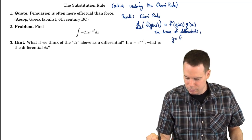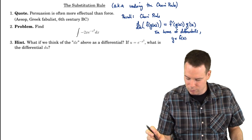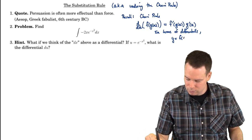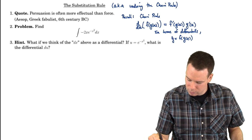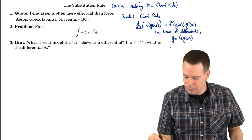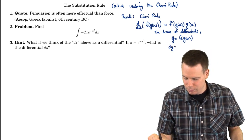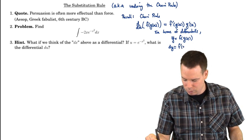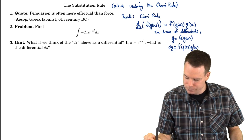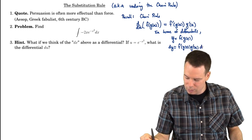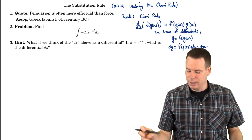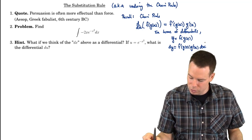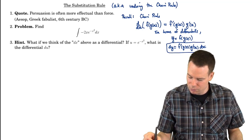In terms of differentials, which is going to be more convenient for us, if y is the composition f of g of x, then dy — the differential — is the derivative of the function by the chain rule, times the differential dx. That's just the chain rule expressed in terms of differentials.